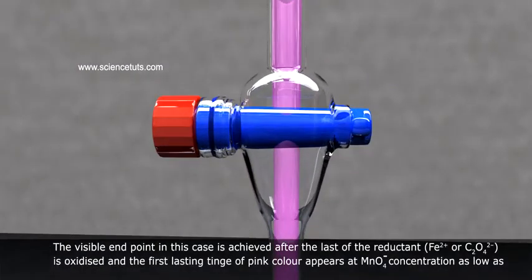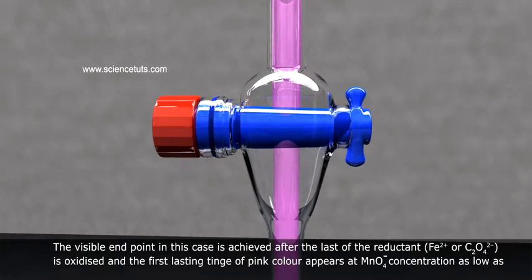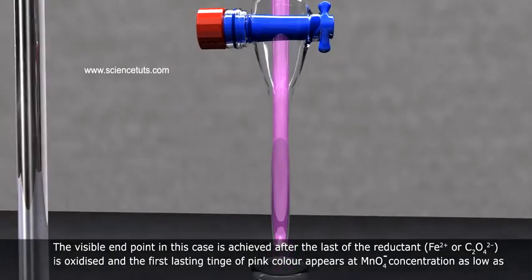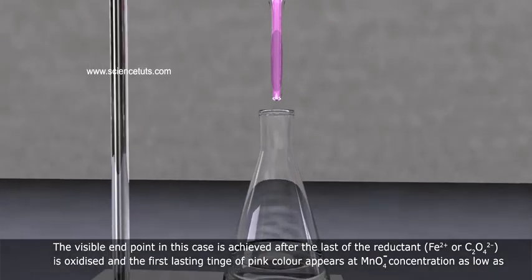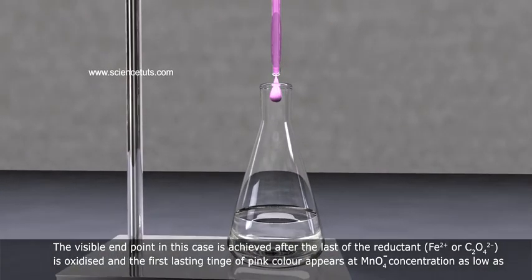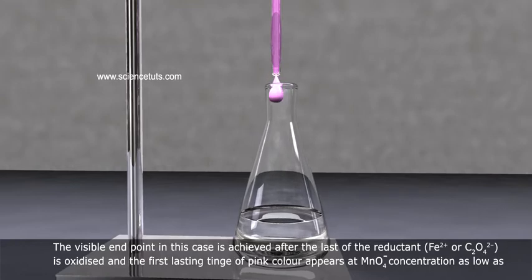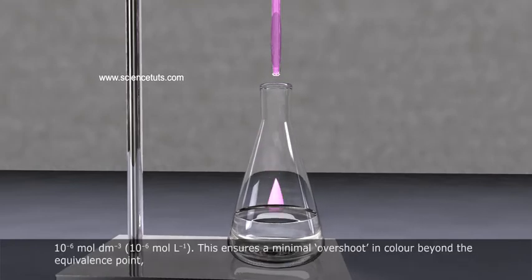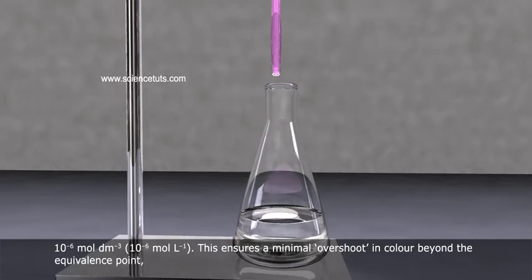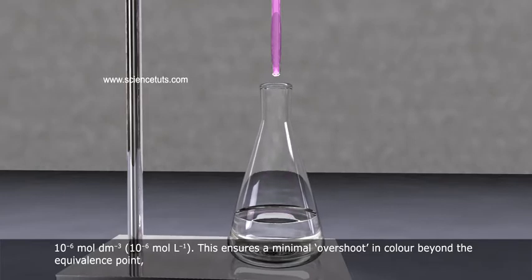The visible endpoint in this case is achieved after the last of the reductant, Fe2+ or C2O4 2-, is oxidized and the first lasting tinge of pink color appears at MnO4- concentration as low as 10-6 mol/dm3.